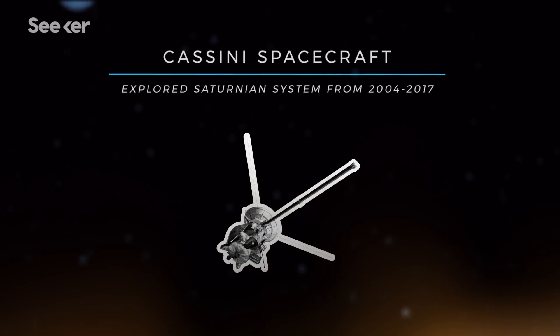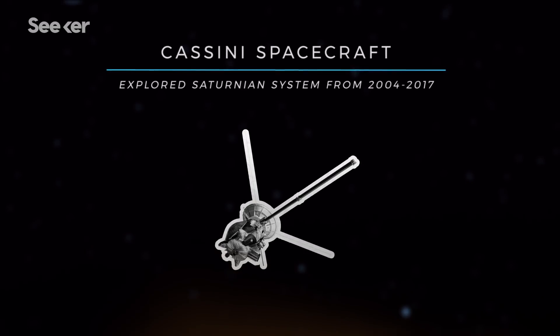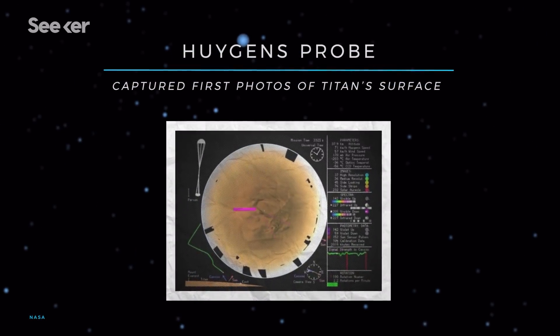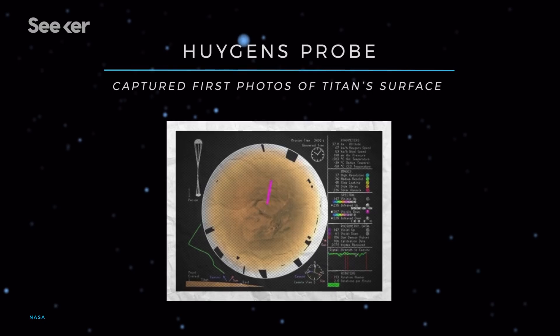Cassini made more than a hundred flybys of Titan and eventually sent a probe dubbed Huygens onto its surface. While en route, two imaging instruments collected data and infrared photos of Titan's surface, which is what you're looking at right now.